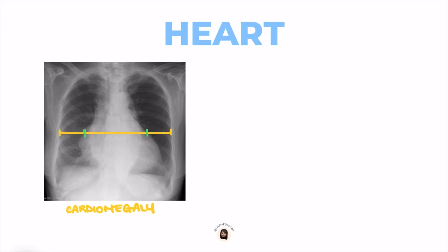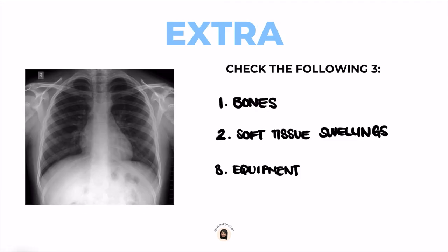This is what cardiomegaly looks like — you can clearly see that the heart's diameter is way more than 50% of the cardiothoracic diameter. Finally, we check extra features, which are three final things. Number one, the bones — look at the clavicles and all of the ribs to check for any fractures. Number two, check for any soft tissue swellings in the x-ray. Third, check for any equipment you can see, for example a pacemaker, a feeding tube, or a nasogastric tube — you want to check their location and make sure they're in the functional position.